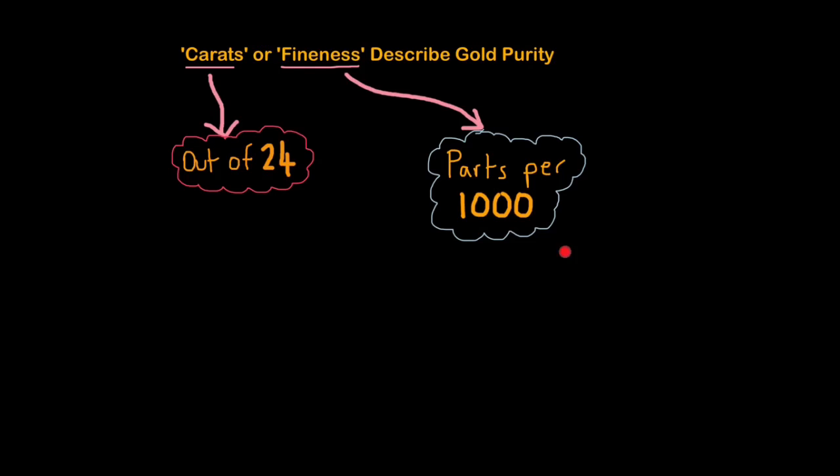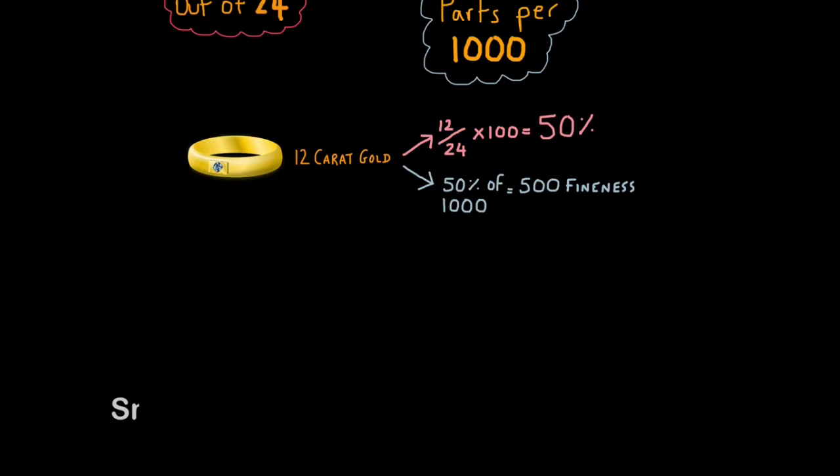Fineness is a measure of parts per thousand. So if a piece of gold jewellery had a fineness of 500, that means 500 of the atoms for every thousand would be gold, and 500 would be something else. Now gold purity calculations don't come up that often, but they can come up in an exam. So let's say you had a 12-carat gold ring. How would you work out the purity? Well, that would be 12 out of 24, because 24 is the maximum purity you can have, times 100. So this would be 50% pure. And 50% of 1,000 would be a fineness of 500. Remember, carat is always out of 24, and fineness is always out of 1,000.